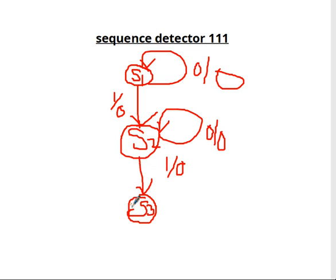So when you get one, third one, output will be one. This is third. Since overlap is allowed, when you get one, you have to remain here only.